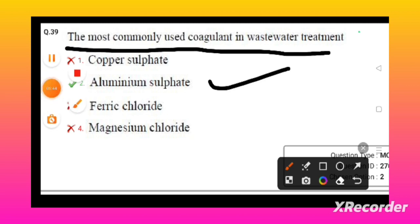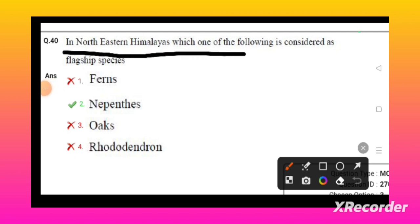In Northeastern Himalayas, which of the following is considered as the flagship species? Nepenthes is considered as the flagship species in the Northeastern Himalayas.